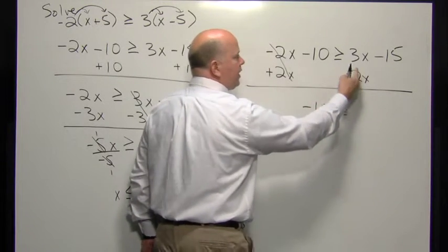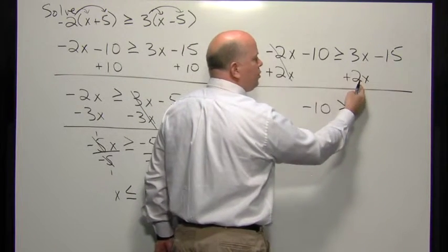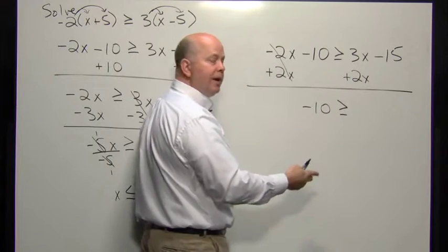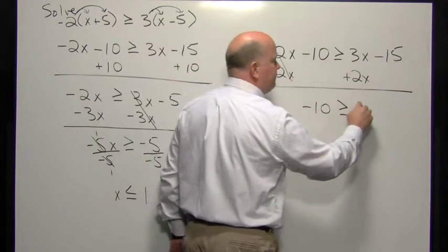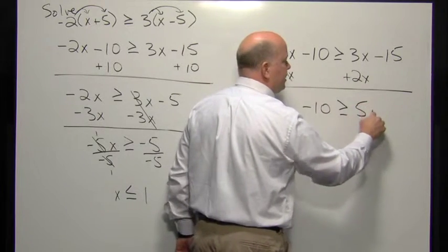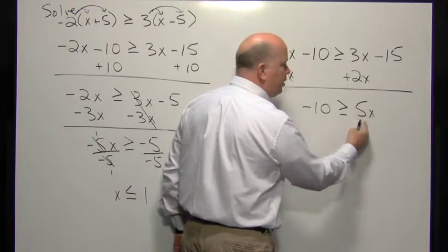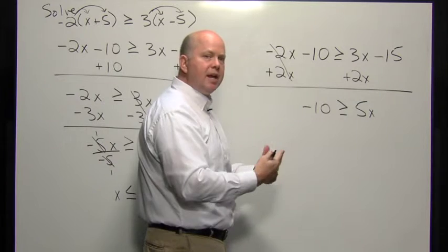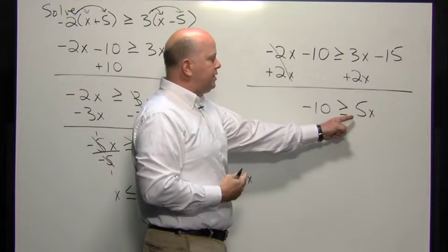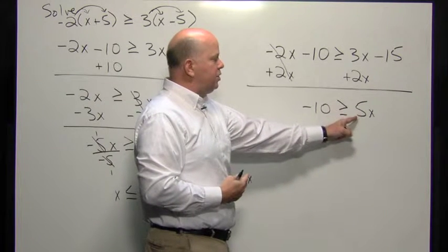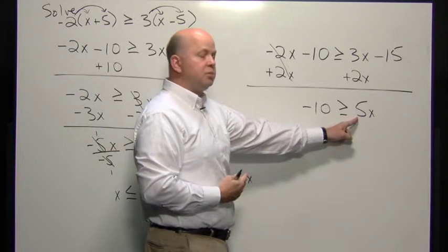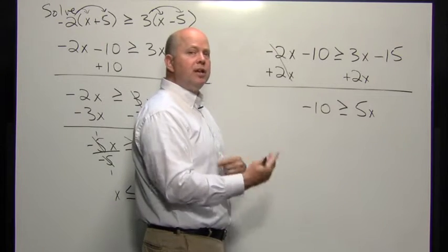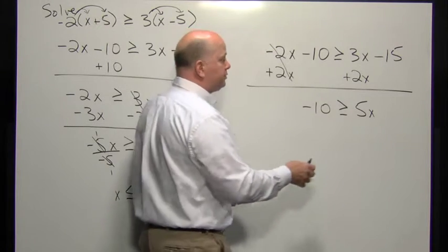That's going to be greater than the quantity of 3x plus 2x, which gives us 5x. Again, if we don't want to deal with reversing the sign, we can see that this is going to be a positive coefficient, so when we divide, we're not going to need to reverse.